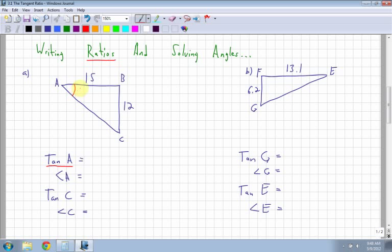Now, what was tan again? Tan was opposite, which is over here, over my adjacent. Remember that my right angle is here, and that means this side here is my hypotenuse.